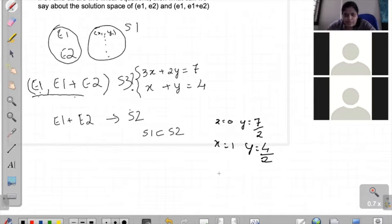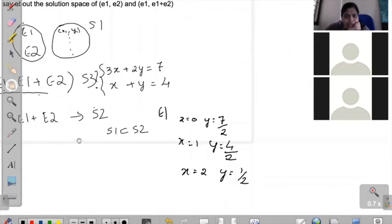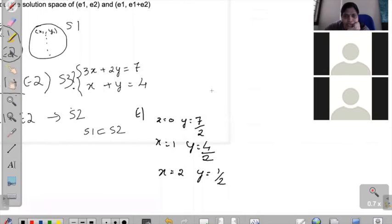And x is equal to 2, y is equal to 1 by 2. So this is the solution space for equation 1. And if you consider equation 2 separately, for x is equal to 0, y is equal to 4, x is equal to 1, y is equal to 3, and x is equal to 2, y is equal to 2.